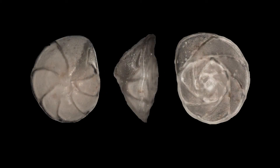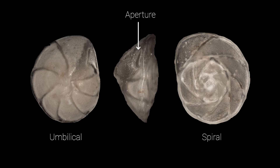To help you visualize the foraminifera in three dimensions, the images you will see will show three views of each specimen. In the form shown here, you see its umbilical side, an edge view with the aperture facing outward, and its spiral side.